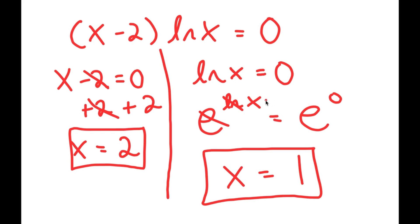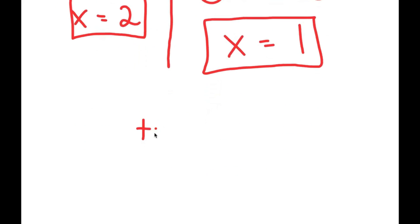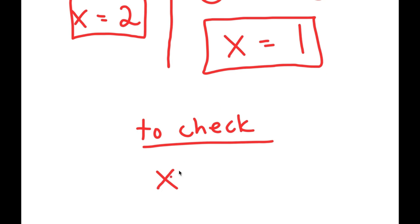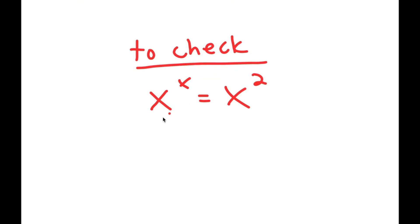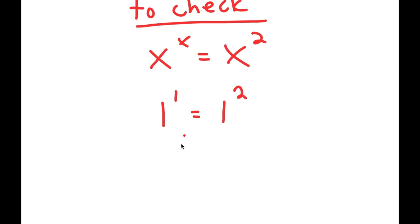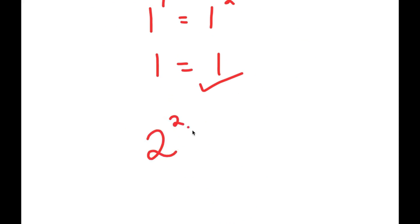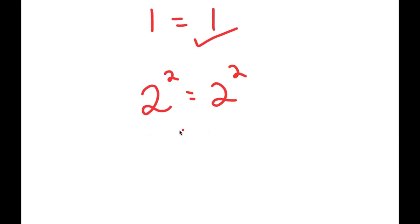Now that I have two solutions for x, I'm going to check to see if these are right. My equation is x to the power of x equals x to the power of 2. Checking x equals 1: 1 to the power of 1 equals 1 to the power of 2, and 1 equals 1, so this is correct. Checking x equals 2: 2 to the power of 2 equals 2 to the power of 2, which gives 4 equals 4, and this is correct as well.